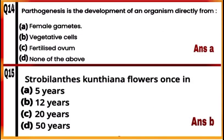Question 14: Parthenogenesis is the development of an organism directly from a female gamete. Development of an organism from female gametes without involving fertilization is called parthenogenesis, and when a fruit is developed by this technique, it is called parthenocarpy. So the correct answer is A — female gametes.